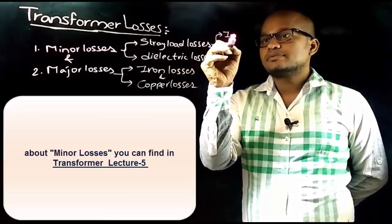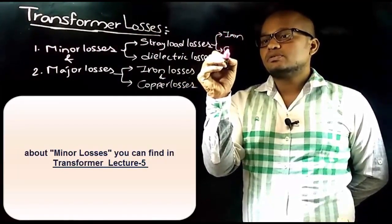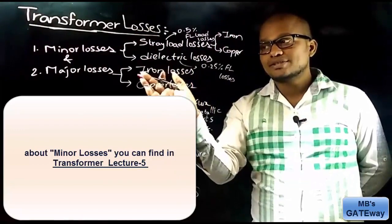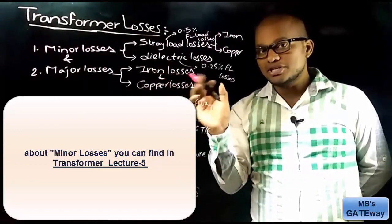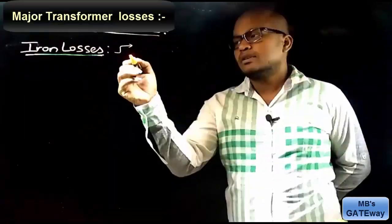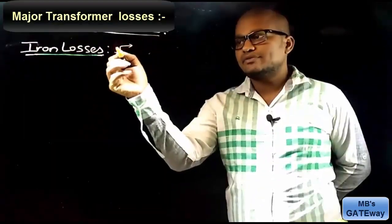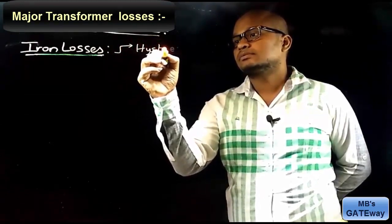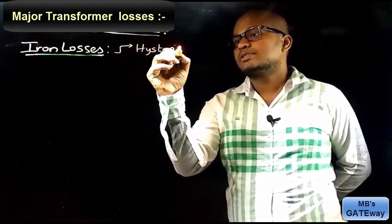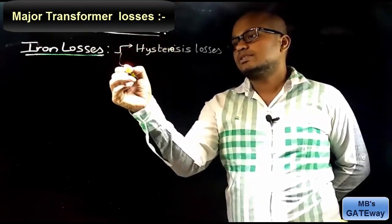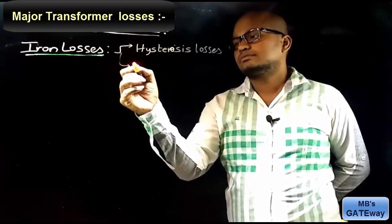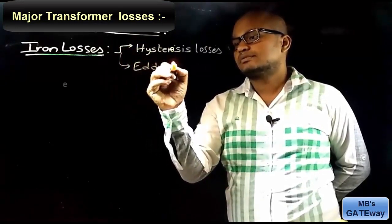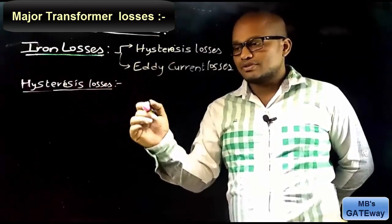Of the minor losses, stray load losses are further classified as stray load iron losses and stray load copper losses. Now let's discuss the major losses. Iron losses are classified into two types: hysteresis losses and eddy current losses.